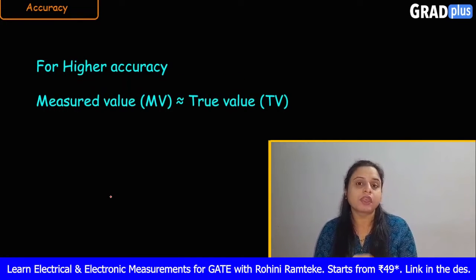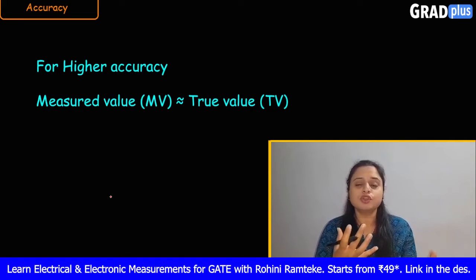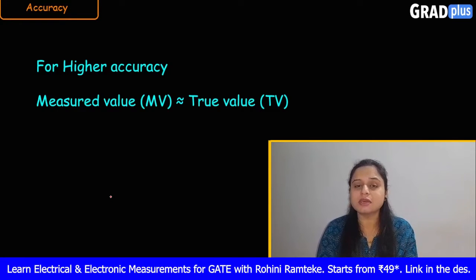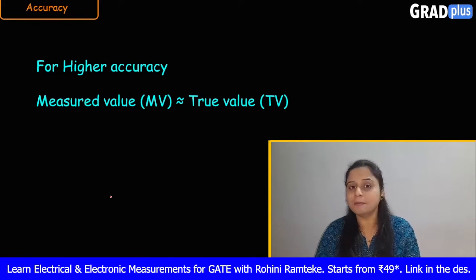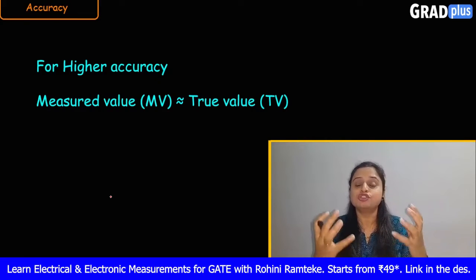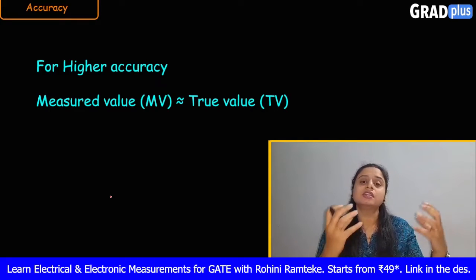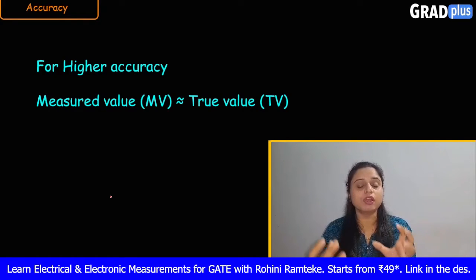As we already know, for any electrical network there will be two types of values: the measured value and the true value. The measured value is the value shown by the meter at a particular instant when we give the supply. If we take many readings and average them all, the resulting value is the true value.